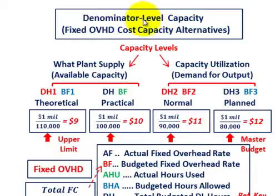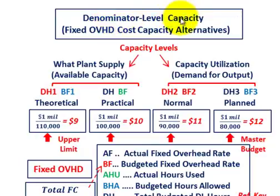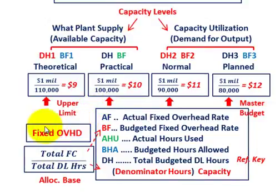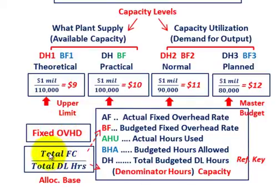What we're going to be going over here is denominator level capacity — really what we're looking at is how we allocate our fixed overhead costs amongst the products that we're manufacturing. This is based on a manufacturing operation, and what they refer to as denominator levels here — you have different choices based on how you allocate your fixed overhead costs. You've got some fixed overhead for your manufacturing operations looking at a particular plant, and you're going to have to allocate those costs amongst the products you're manufacturing.